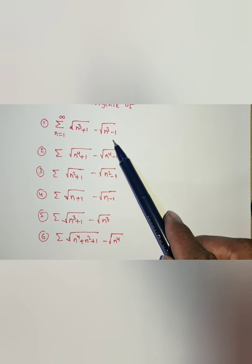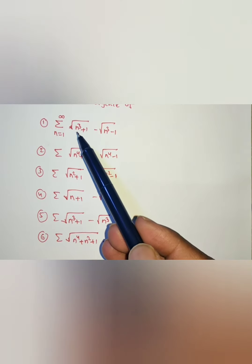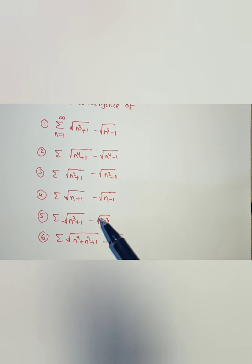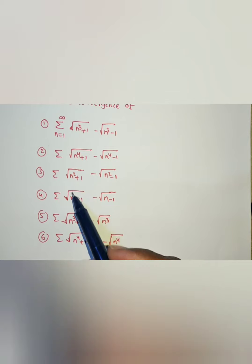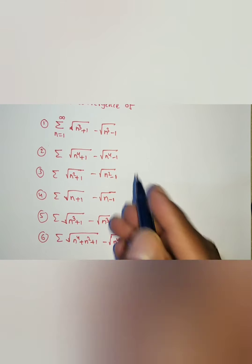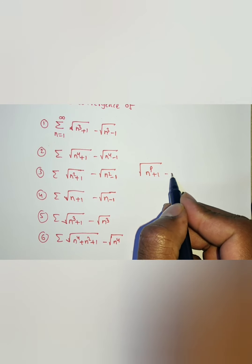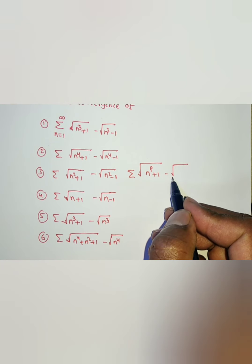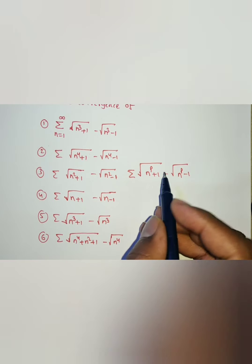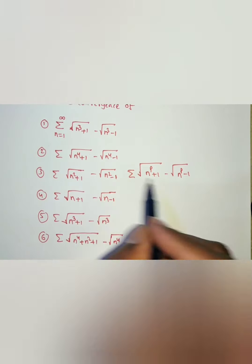You observe here: 3, 4, 2, 1. To solve these types of problems, instead of specific values 3, 4, 2, 1, I am considering directly one variable — a constant. So I am taking the general form: summation of square root of n to the power of p plus 1 minus square root of n power p minus 1. If you put p equal to 1 you get this one, p equal to 2 this one, p equal to 3, p equal to 4.